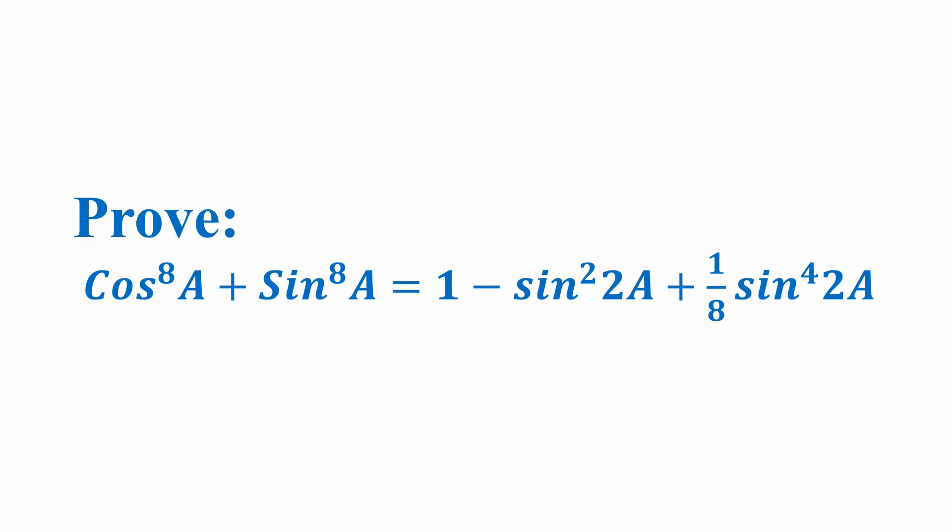Hello friends, welcome to our new YouTube video. Today we are here with a new problem related to trigonometry. The question is: cos⁸a + sin⁸a = 1 - sin²2a + (1/8)sin⁴2a. This is our question.